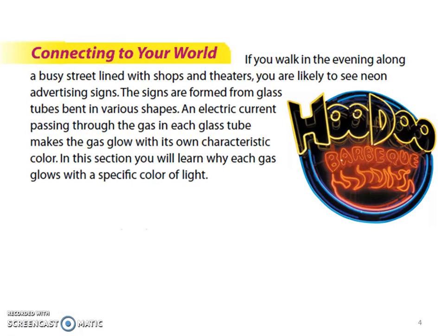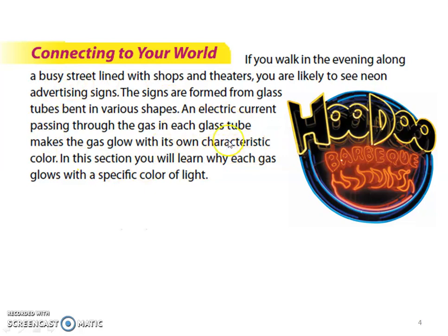Have you ever seen neon signs? When you pass an electric current through those gases — and there are different gases in neon signs — the red ones are probably filled with neon gas, but your blue, yellow, purple, and green ones are filled with different gases. When we give them electricity, they each give their own characteristic color. In this section, you're going to learn why each gas glows with that specific color of light.